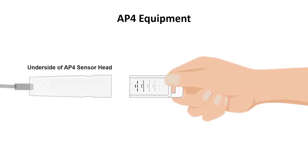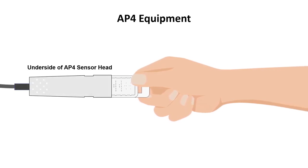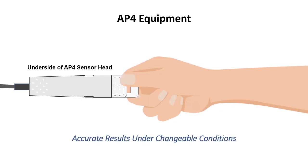The AP4 system also includes a calibration reference plate which inserts into the sensor head. This enables rapid six-point field calibration, ensuring consistent and accurate results under changeable conditions.